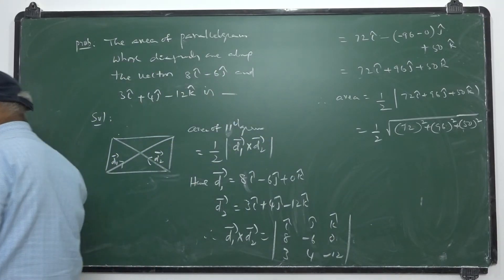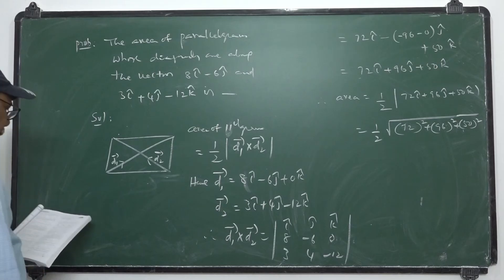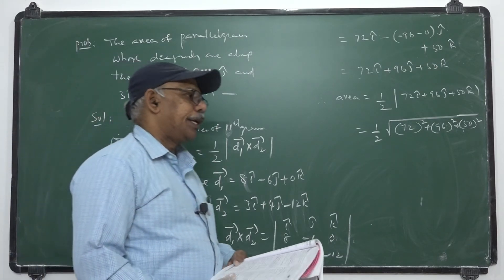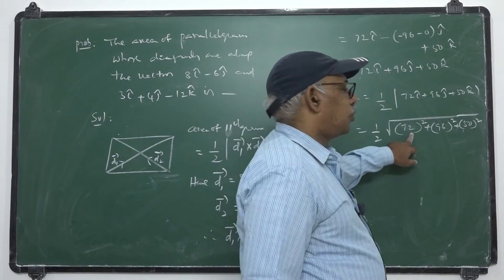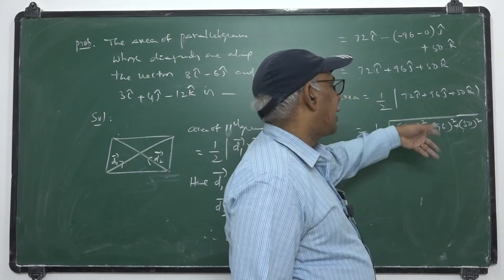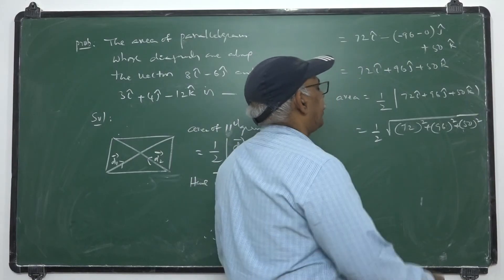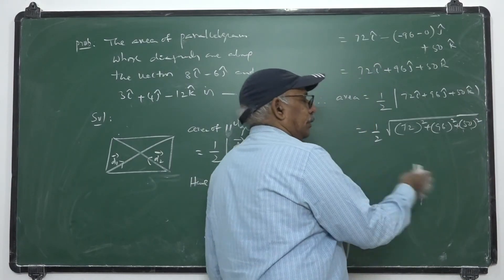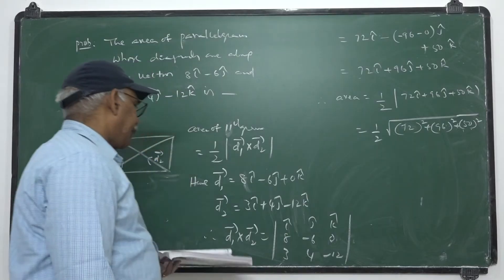On simplification we get the required area. You can take 2 as common — since 2² = 4 as common — giving √(36² + 48² + 25²). On evaluation we get the required area.